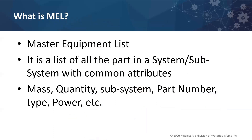MEL is a Master Equipment List — a list of parts in the system. It includes parts and subsystems which define the hierarchy, and all have some common attributes. In general, the attributes you will find in a master equipment list include mass, quantity, different subsystems, part number, types of values that will change, total power consumption, etc. This information has to be managed in your process when defining the system hierarchy.